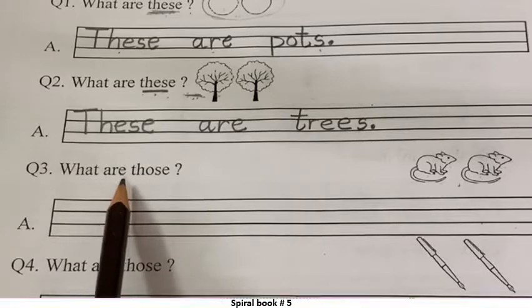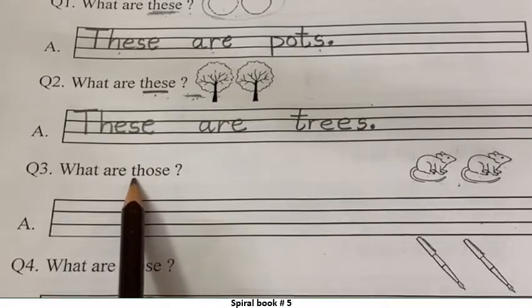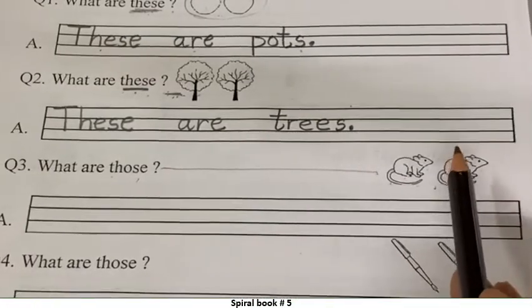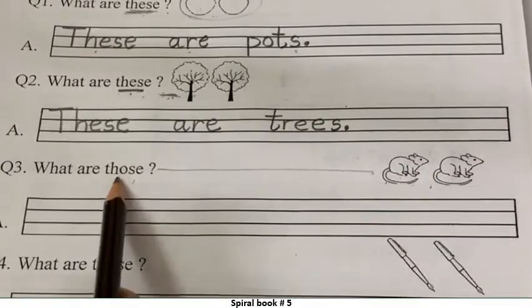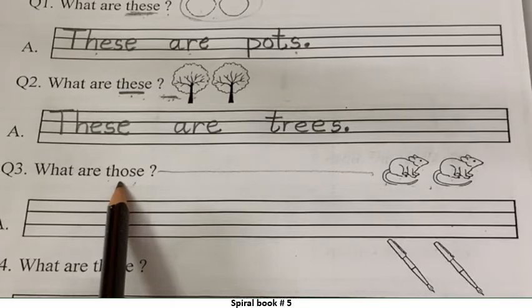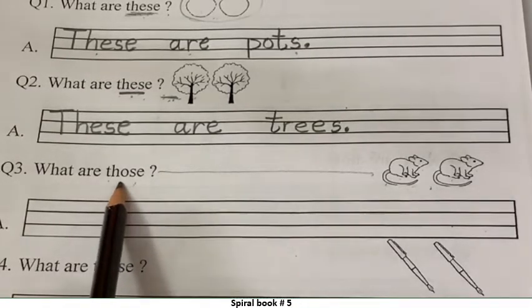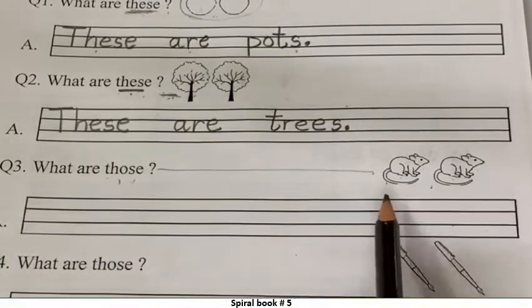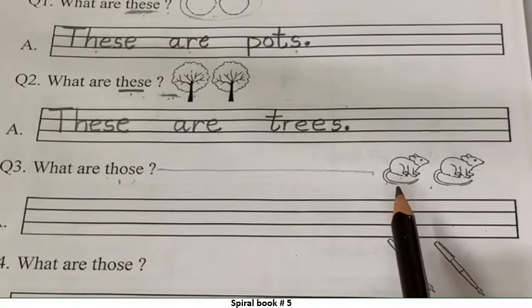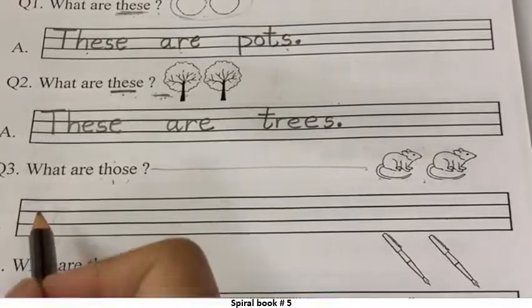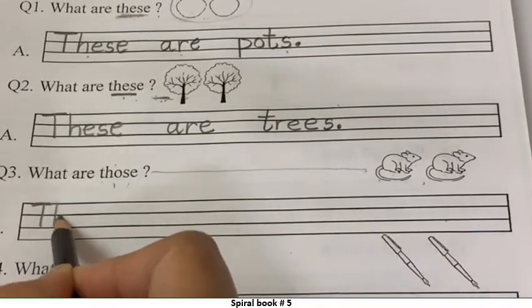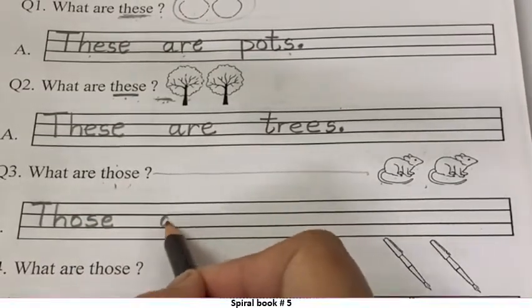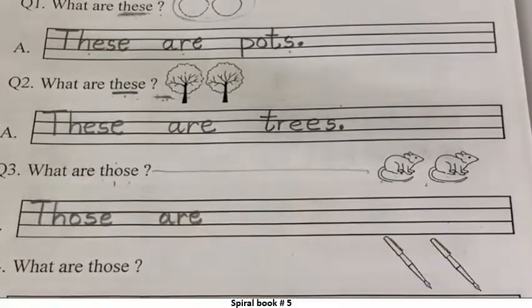Come on. Next one. What are those? See? Now it says those. T, H, O, S, E. Those. See? Rats. Right? Rats are far. And two rats are here. So those. For those. Ab those ko Hindi mein kya boleng hai aap? Vey. Vey. Kya hai vey? Vey rats hai. What are those? Those are rats. Come on. T capital. H, O, S, E. Those. And then one finger gap. A, R, E.